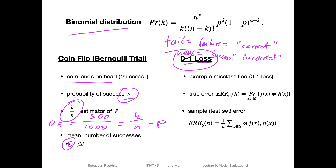We can consider the 0-1 loss as a Bernoulli trial, and then we can also compute the true error as a probability of incorrect predictions. Using the notation here: f of x is the true function — think of it as y or class label — and h of x, the hypothesis, think of it as y-hat, our prediction. The true error, considering all data in the world, is the proportion of cases where these are not equal; that would be our error, and the proportion where they are equal is our accuracy.